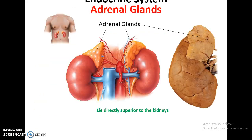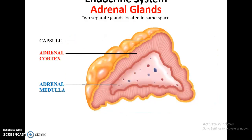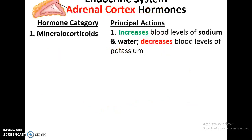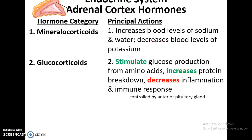The adrenal glands sit directly superior to the kidneys. There are actually two separate glands in this space: the adrenal cortex and the adrenal medulla. The adrenal cortex releases three main categories of hormones. Mineralocorticoids affect levels of electrolytes in the bloodstream — they increase blood levels of sodium and thereby overall blood volume, and decrease blood levels of potassium. Glucocorticoids stimulate glucose production from non-carbohydrate sources such as amino acids, increase protein breakdown, and can decrease inflammation and immune response. Glucocorticoids are at least partially controlled by the anterior pituitary gland.